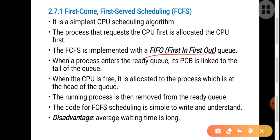One disadvantage of this FCFS algorithm is that average waiting time is longer. Average waiting time is nothing but the total time taken by all the processes to wait for the CPU, divided by the total number of processes.